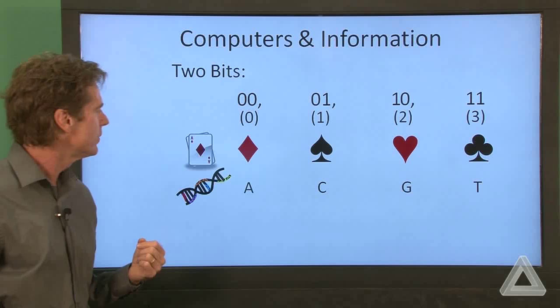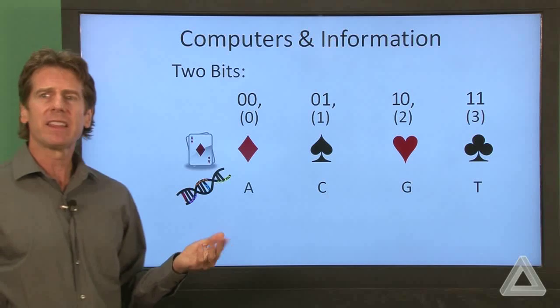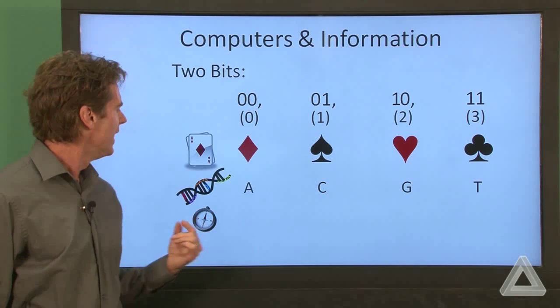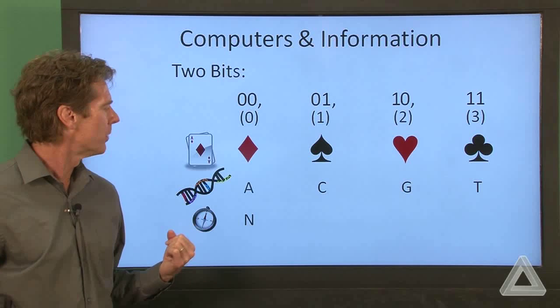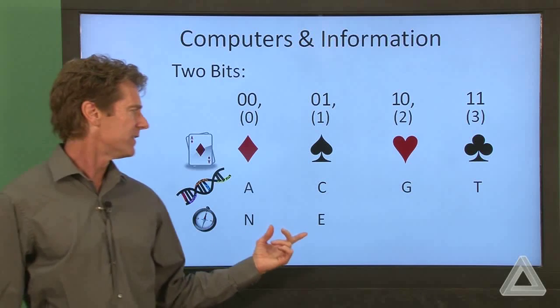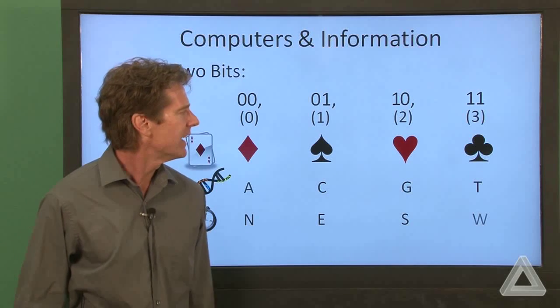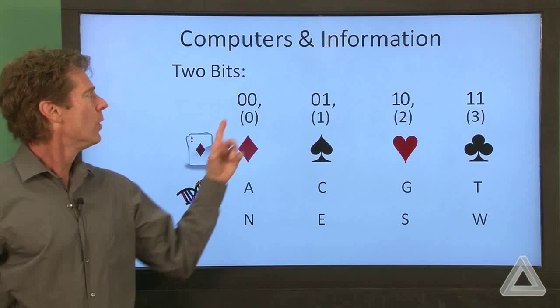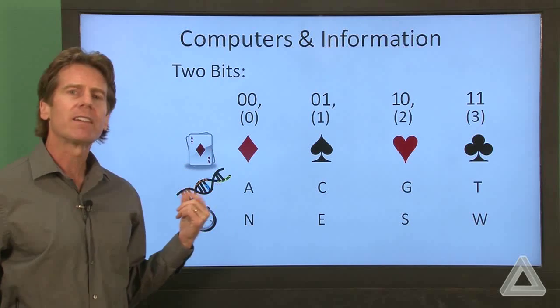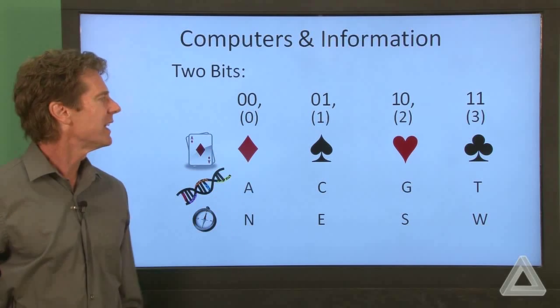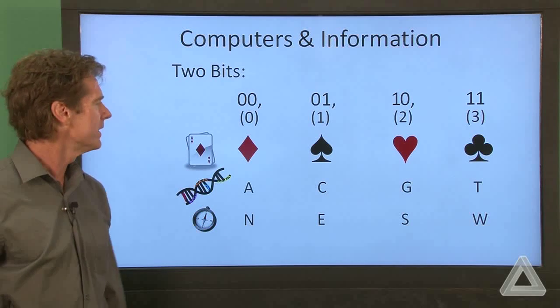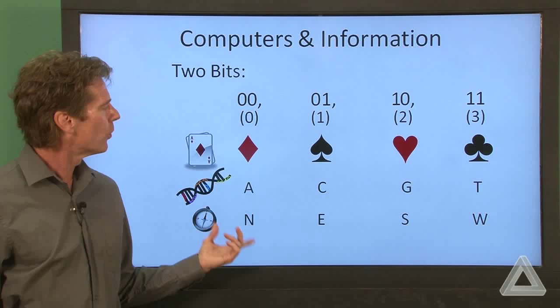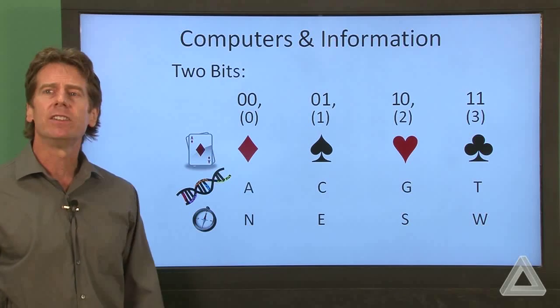Or another thing that there are four of, how about if we're looking at a compass and the cardinal directions on a compass. There's north, there's east, there's south, and there's west. Again, these bits aren't necessarily numbers. They can represent information. And this just demonstrates a few of the countless possibilities we have for mapping information to these bits.